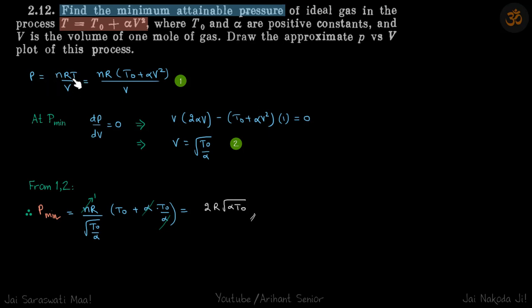So pressure is nRT by V, so we write T as a function of volume which is given. So now we have P as a function of volume, so at minimum pressure dP/dV should be zero.